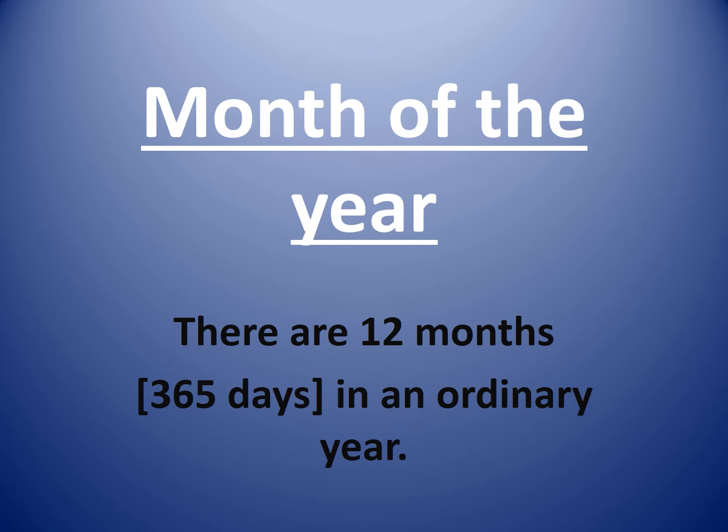There are 12 months, that means 365 days in an ordinary year. Let's see the names of the months.